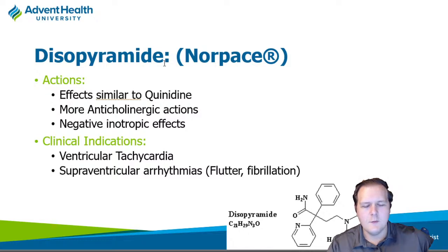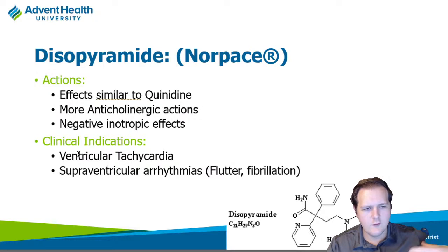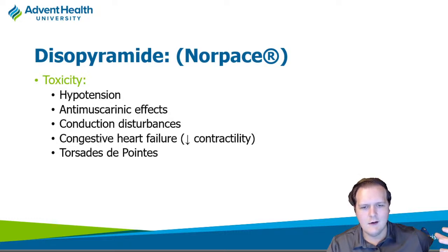The last 1A drug is disopyramide, or Norpace. It has similar effects to quinidine minus the cinchonism. It has more anticholinergic effects and some negative inotropic effects — the contractility of the heart is affected. Like all class 1 antiarrhythmics, it's good for both ventricular and atrial arrhythmias. Due to the decrease in contractility, you want to be watchful in patients who have CHF, as cardiac output can be affected.